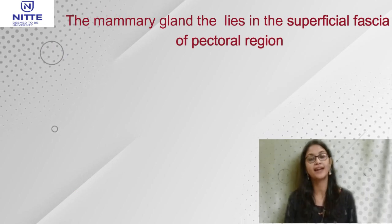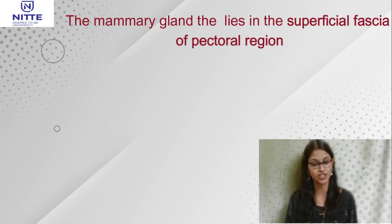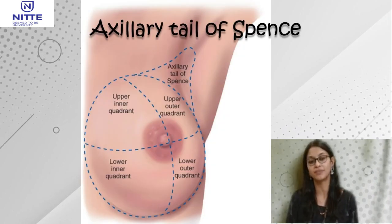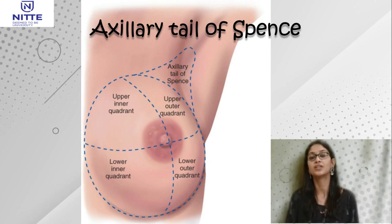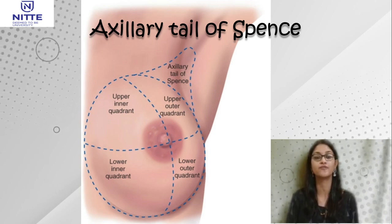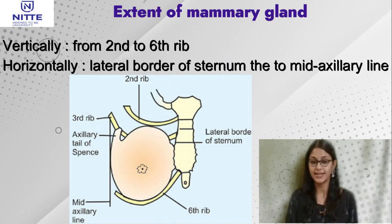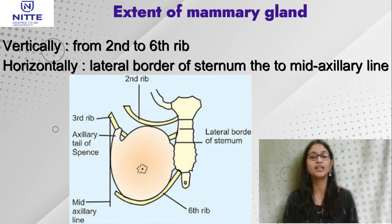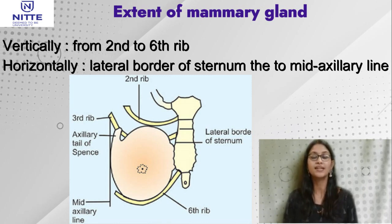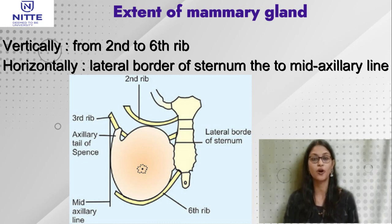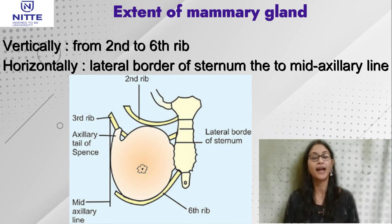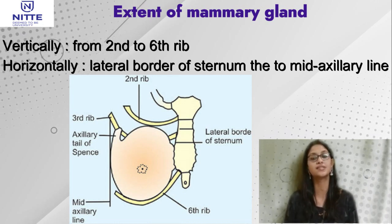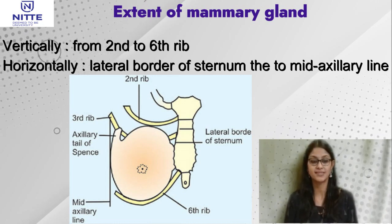The mammary gland lies in the superficial fascia of the pectoral region. The outer and lateral quadrant of the mammary gland extends into the axilla, forming the axillary tail of Spence. Vertically it extends from the second to sixth ribs, and horizontally the mammary gland extends from the lateral border of the sternum to the mid axillary line.